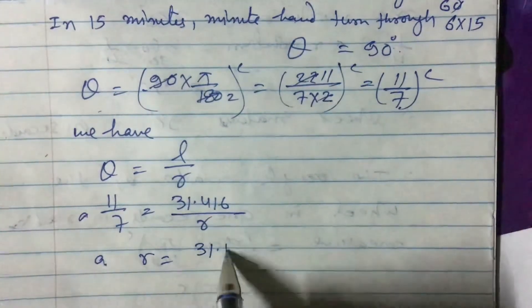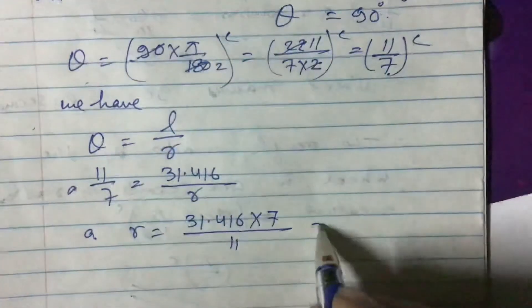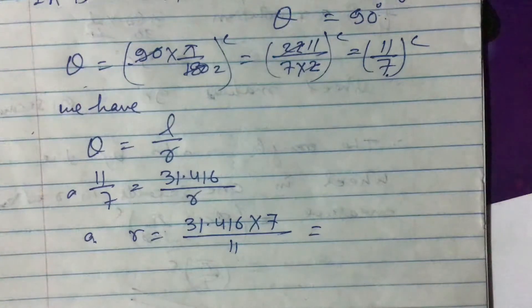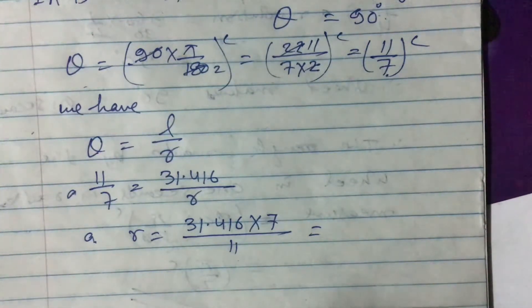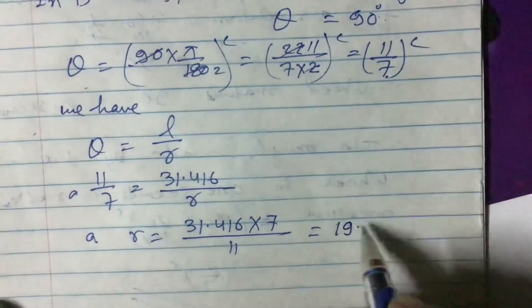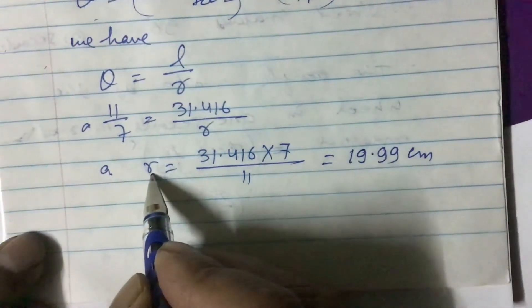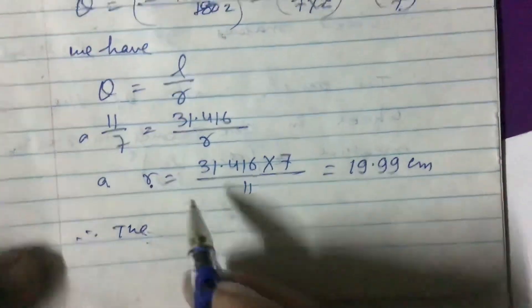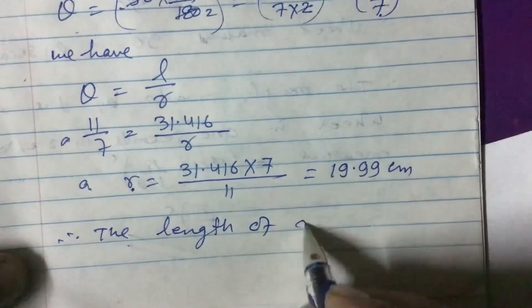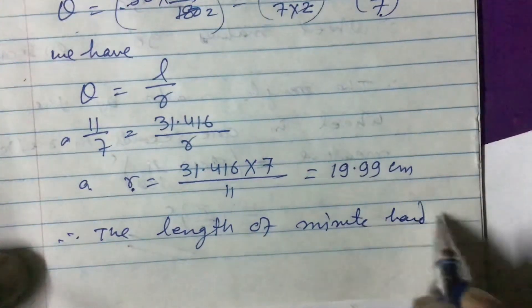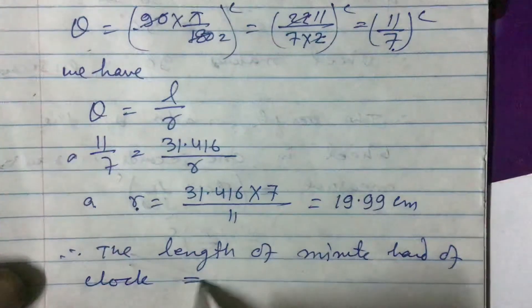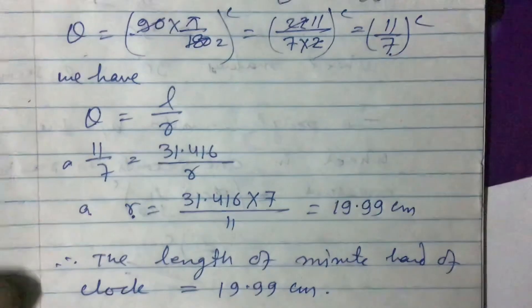R equals 31.416 times 7 divided by 11. Since this is a decimal quantity, you can use a calculator: 31.416 times 7 divided by 11 gives 19.99, which is almost 20 centimeters. Therefore, the length of the minute hand of the clock equals 19.99 centimeters. Thank you for watching this video.